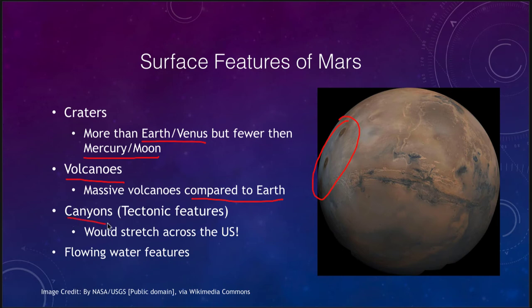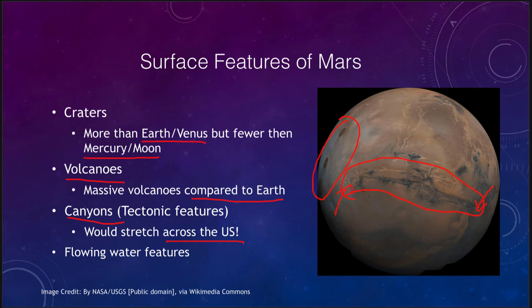We also see great canyons — not like canyons on the Earth, but great tectonic features. We can see what is called Valles Marineris here, and that is a gigantic tectonic feature that has since been eroded away. This would stretch across the entire United States — you could put Washington DC on one side and the other side would be out towards San Francisco. It is more like some of the great rift valleys we see here on Earth than things like the Grand Canyon. We also see flowing water features on Mars — not current, but enough to know that water has flowed on Mars in the past.